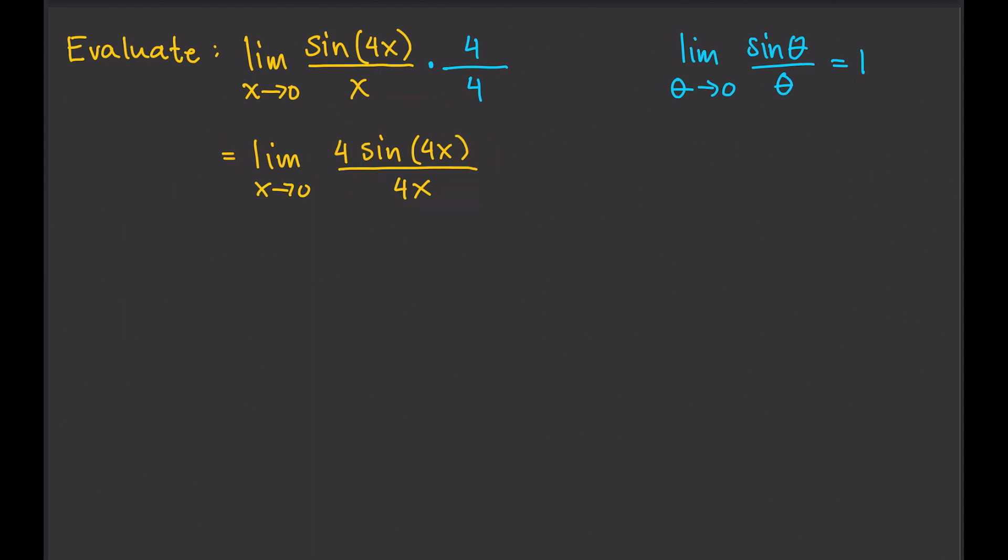So then we can write that as 4 times the limit of sine 4x over 4x as x approaches 0. And that's exactly this. And we know that the limit is equal to 1.